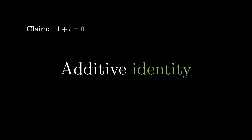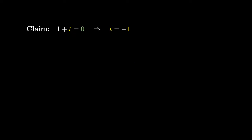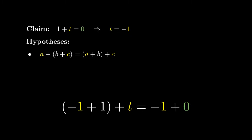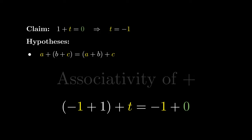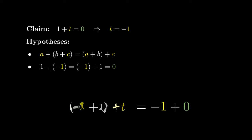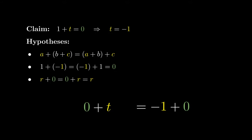On a similar note, if 1 plus the integer t equals the identity 0, we claim that the integer t must equal negative 1, which is called the additive inverse of 1. We're going to start with the equation 1 plus t equals 0, and add negative 1 on both sides. We shift the brackets using associativity of addition. The number negative 1 is defined as the number that, if added to 1 on either side, gives the additive identity 0. Since 0 is the do-nothing number, adding it to any number r leaves r unchanged, giving us t equals negative 1.